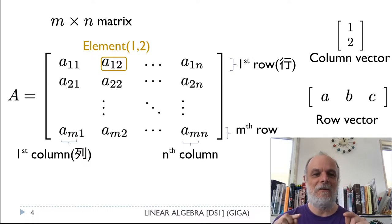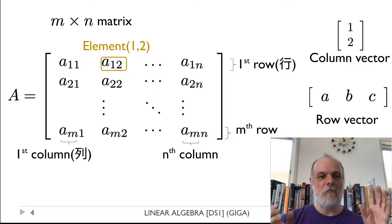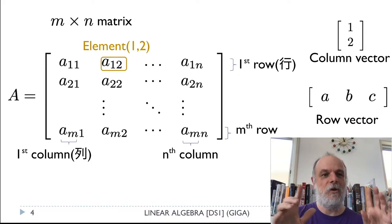Within that, then we'll use a small a or a small b correspondingly with subscripts to tell you which element we're talking about when we're talking about one specific element. So here I've written A equals left square bracket. So sometimes you'll see me write them with square brackets. Sometimes you'll see me write them with round brackets that are like giant parentheses.